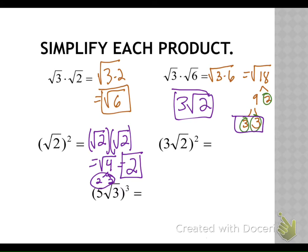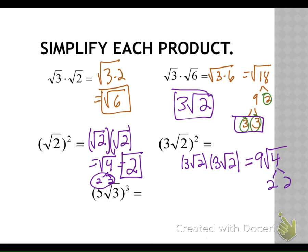Our next one: we have three square root of two times three square root of two. So we start with multiplying our coefficients — the coefficients in this case are the three. Three times three is nine. We multiply the stuff in our radicals: two times two is four. We branch out the four — it has factors of two and two. I'll circle my leaves. Box in the ones that have a buddy. The twos have a buddy, so two comes out. So now we have nine times two, which is eighteen.